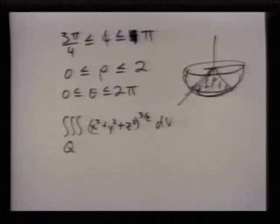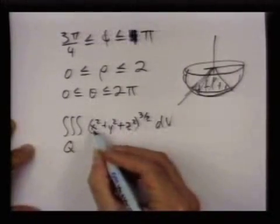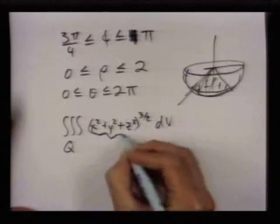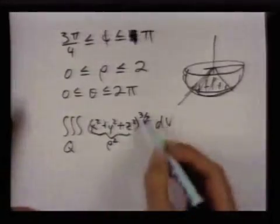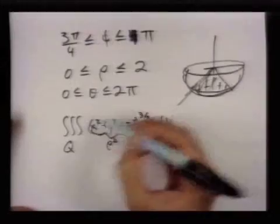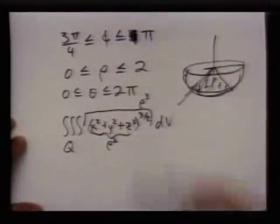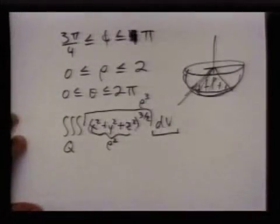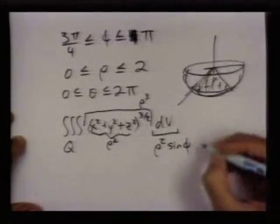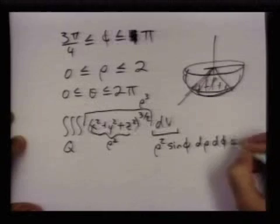If you recall, the triple integral was this. Now we can write this in spherical coordinates. X squared plus y squared plus z squared is rho squared, and then we take that to the three halves so we get rho cubed. So this whole thing is rho cubed, and when we change to spherical coordinates, dV becomes rho squared sine phi d rho d phi d theta.